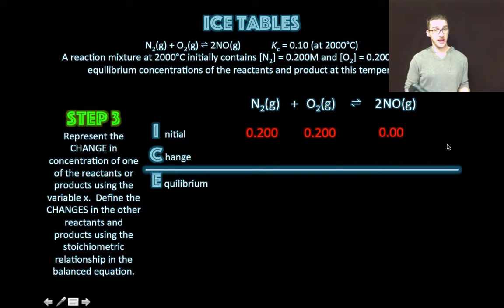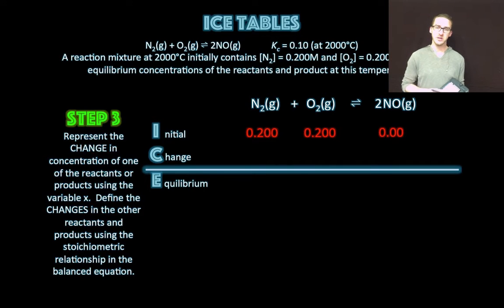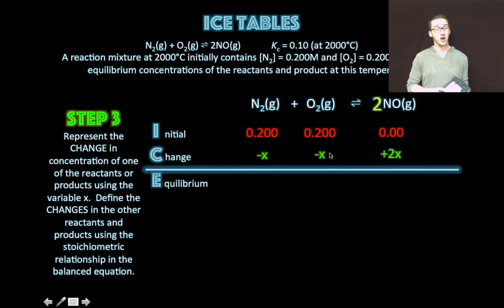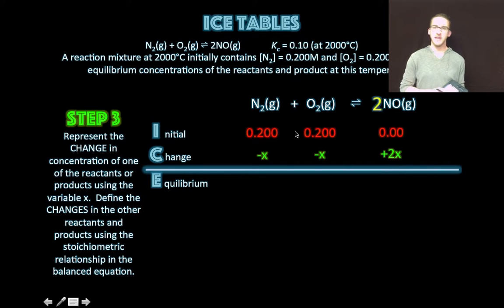Step three: represent the change in concentrations using the variable X, then define the changes in the other reactants and products using the stoichiometric relationship in the balanced equation. Because we're not given an equilibrium concentration, we use the variable X. The change in X for nitrogen and oxygen are each minus X — the reaction is shifting to the right so these concentrations decrease. The concentration of NO is increasing, so it's positive 2X, twice as much as N2 or O2 as indicated by the stoichiometry.